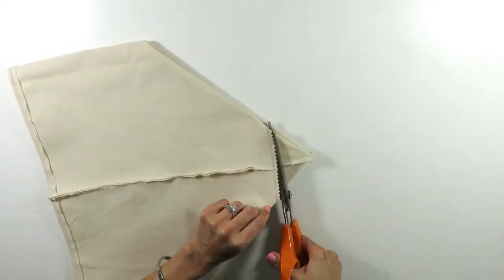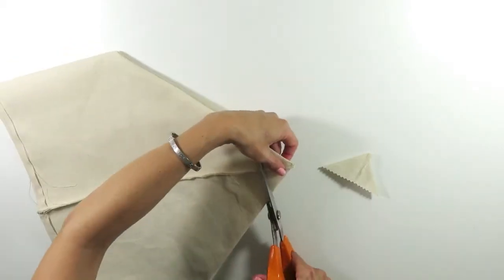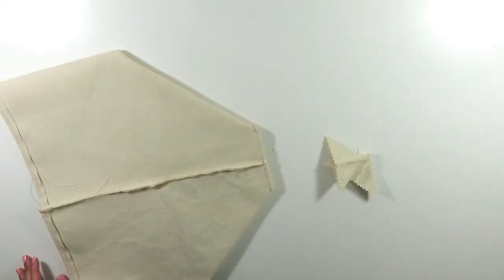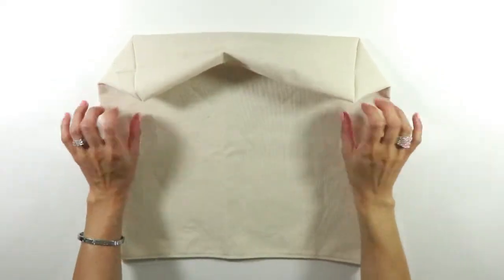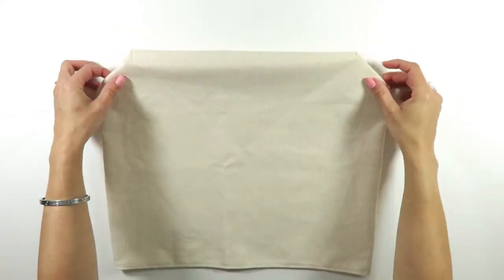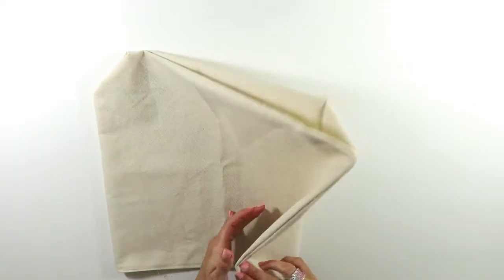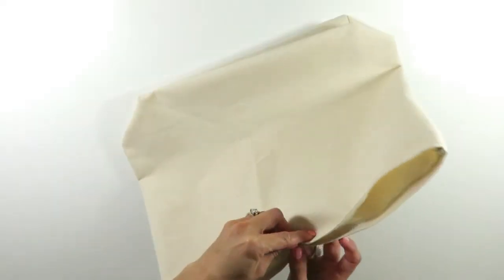And then I cut the end of those two triangles, then I turn the bag right side out and this is how it's looking. It's pretty much ready except for the straps. All I have to do now is decorate it, which is the fun part.